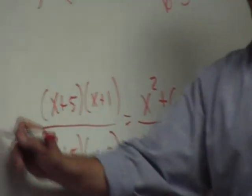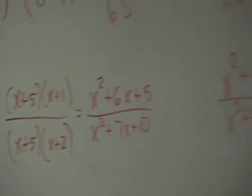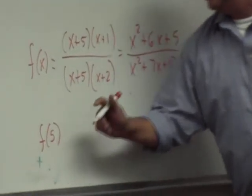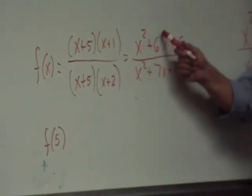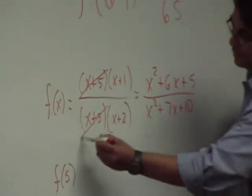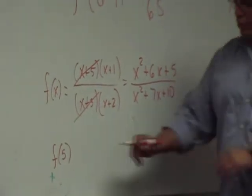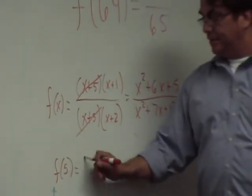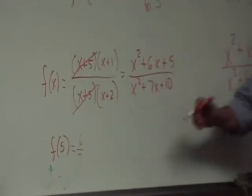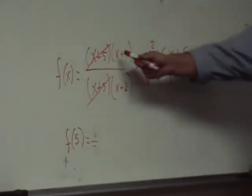Now suppose that this is f of x. And suppose now that I tell you, I'd like you to figure out what is f of 5. Do you have to plug in the 5 in here and say 5 squared plus 6x plus 5? No, right? You know that these guys are going to cancel out. What are you left with? (x + 1) over (x + 2). So what would be f of 5? 6 over 7. I bet you if you do this here the long way and you simplify it eventually you'll get to 6 over 7, but it will take you a lot longer to do it if you plug it in here than if you just plug it in here. And these are equivalent rational expressions.